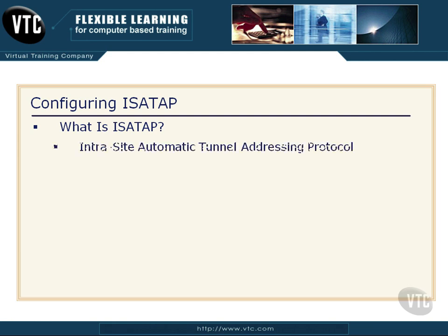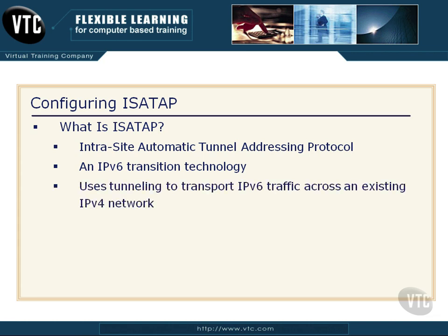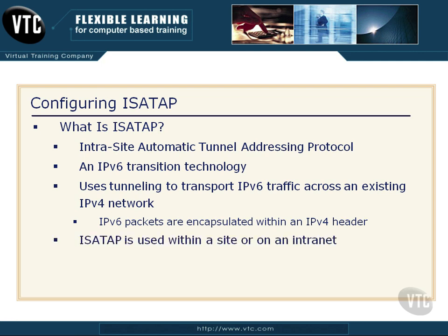What exactly is ISATAP? Well, the name really tells you a lot about it: Intrasite Automatic Tunnel Addressing Protocol. This is an IPv6 transition technology designed to help us move IPv6 traffic across an IPv4 network that doesn't support IPv6. What it's going to do is use tunneling — the IPv6 packets are encapsulated within an IPv4 header, so the router thinks it's looking at IPv4 and the traffic goes across the IPv4 network. Then when it gets to the other end, it's broken out and there's your IPv6.